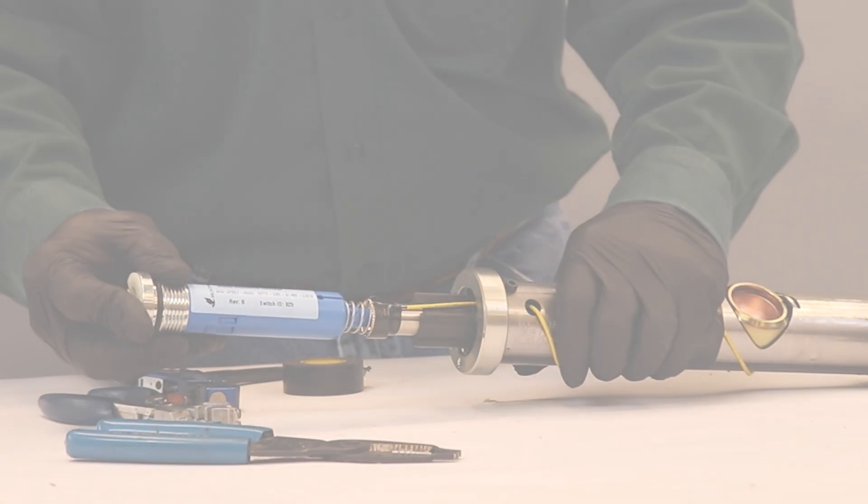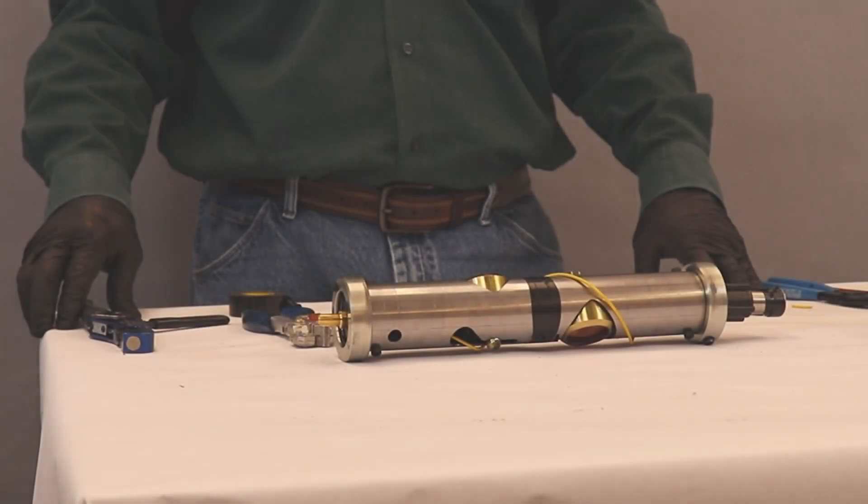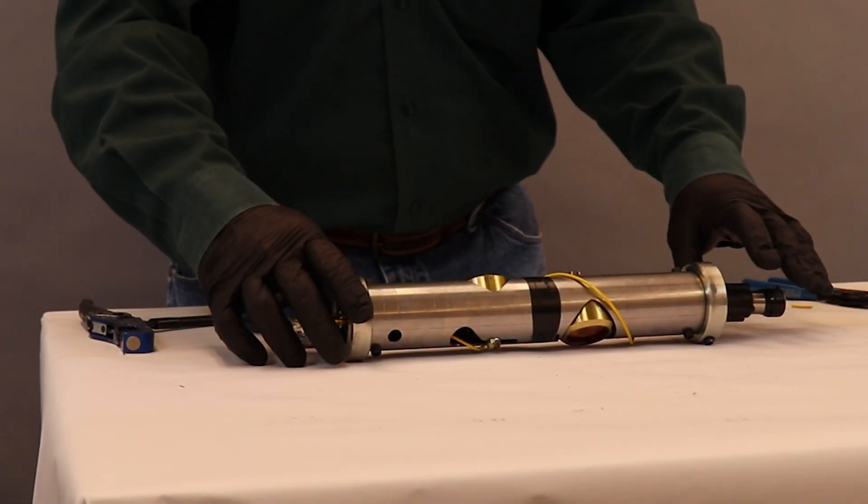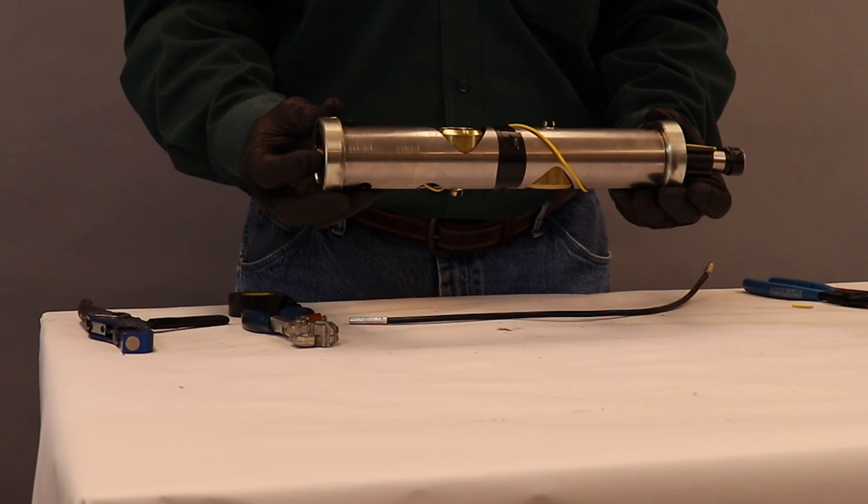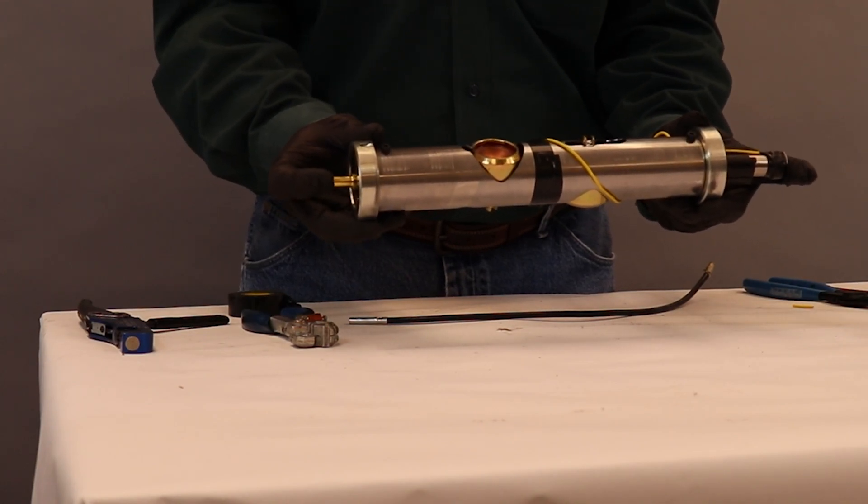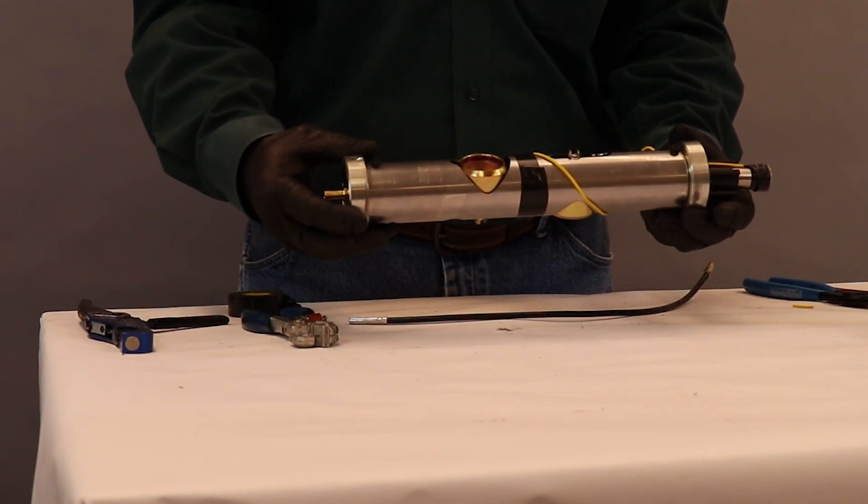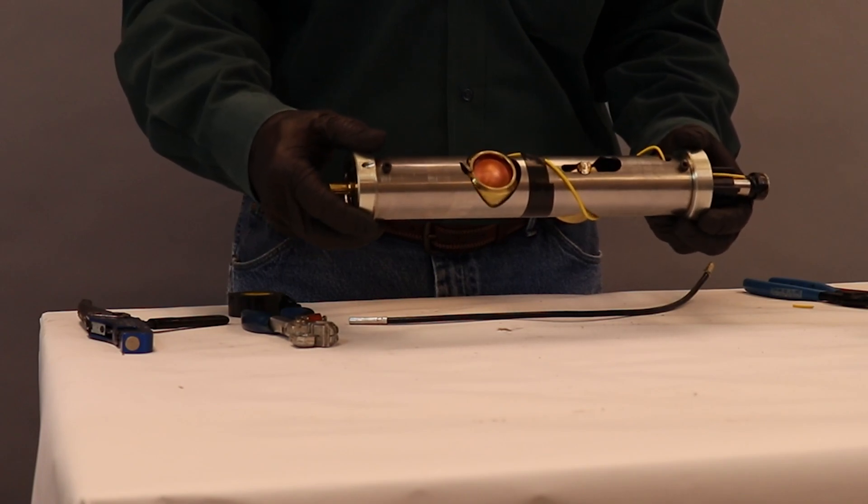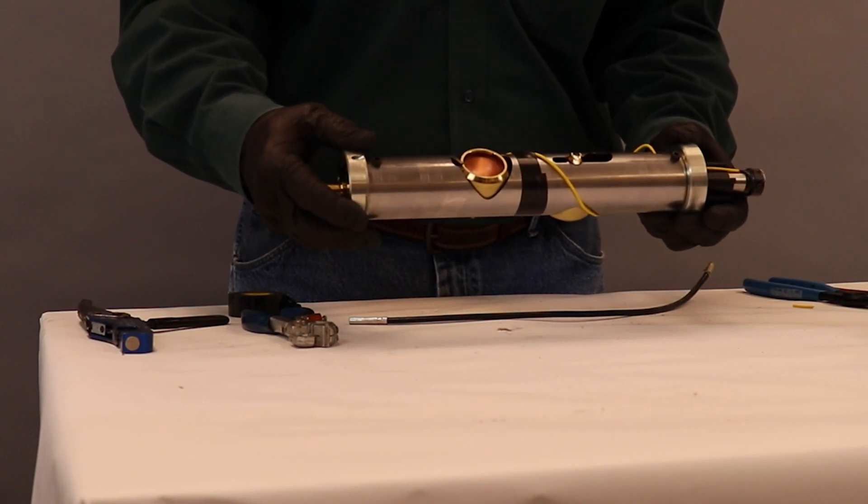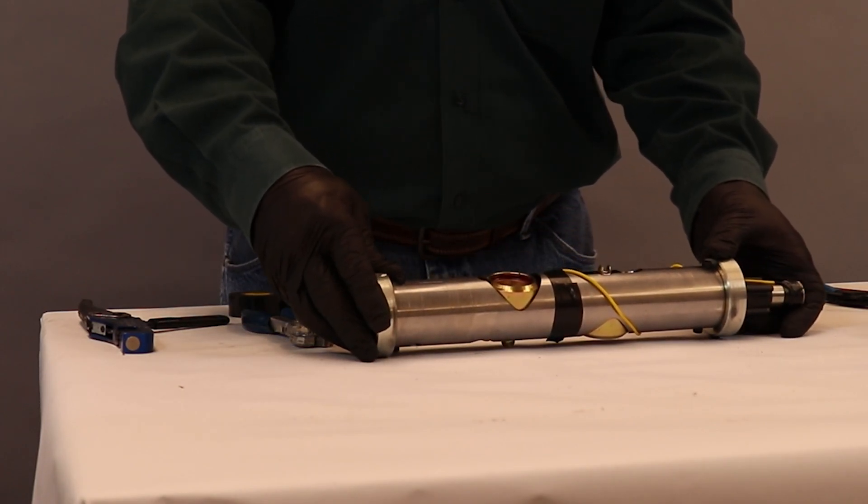So now we have our charge tube wire. If you wanted to, you could connect and check for continuity. In this case here, we're dealing with a one-foot gun.